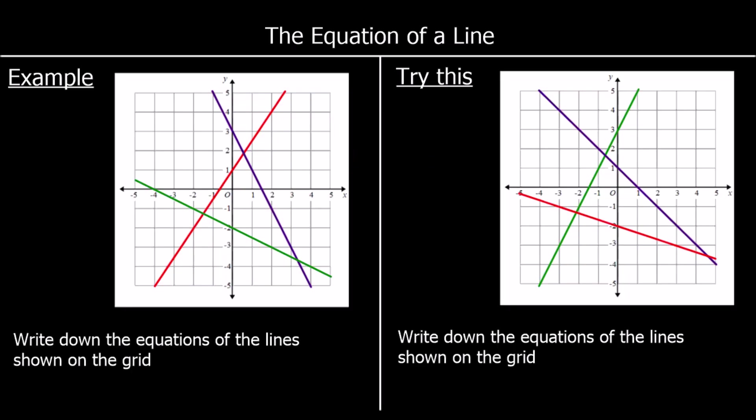The equation of a line. In these questions, we've got lines drawn on the grid and we need to find their equations. The equation of a line is in the form y equals mx plus c, where m is the gradient and c is the y-intercept. The gradient is for every one it goes across, how much it goes up or down.